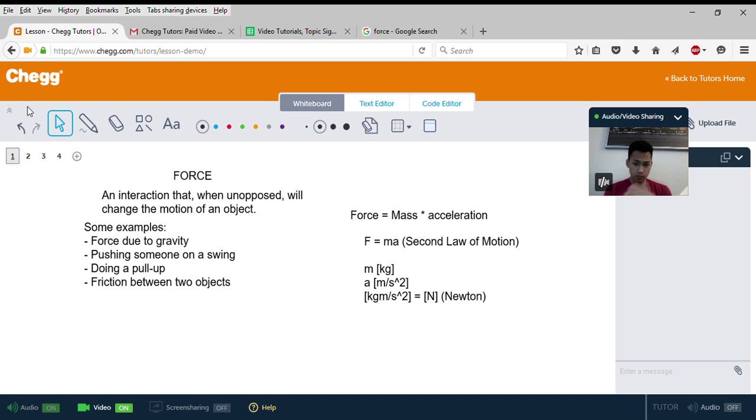Acceleration would be in meters per second squared. If you multiply those two together, you'd get a unit of kilogram meters per second squared, which equals one Newton, the SI unit for force, written as capital N.